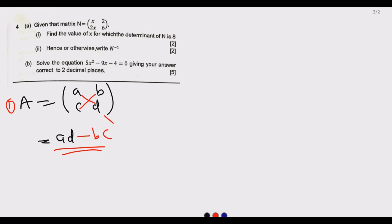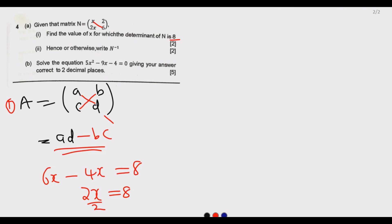Applying this to our matrix: x times 6 gives 6x, then minus 2 times x gives minus 2x, so we have 4x equal to the determinant. The determinant is 8, so 6x minus 2x gives 2x equals 8. Dividing both sides by 2, x equals 4. This is how you get the first three marks.